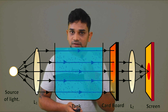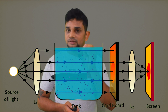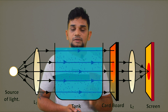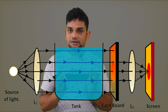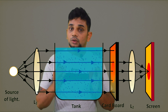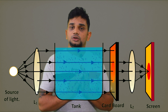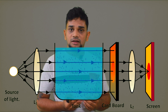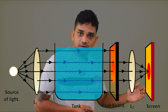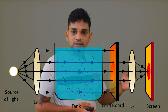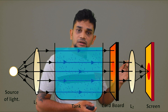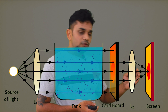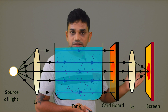The reason the solution appears blue is scattering. Violet, indigo, and blue colors have shorter wavelengths and they undergo scattering, spreading throughout the medium. The remaining colors — red, orange, and yellow — have longer wavelengths, so they continue through and reach the screen.